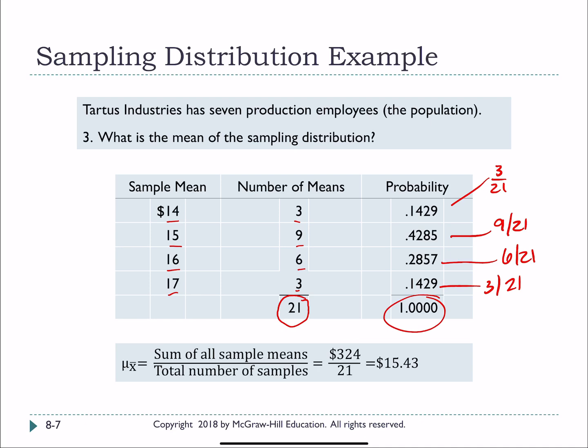So next question says, well then what is the mean of the sampling distribution? To find that we're simply going to sum up all of the sample means and divide by our total number of samples, which our lowercase n here was 21. So if we sum up 14 times three plus 15 times nine plus 16 times six plus 17 times three. What is then the mean of our sampling distribution? It is $15 and 43 cents, which does exactly match the mean of our population.